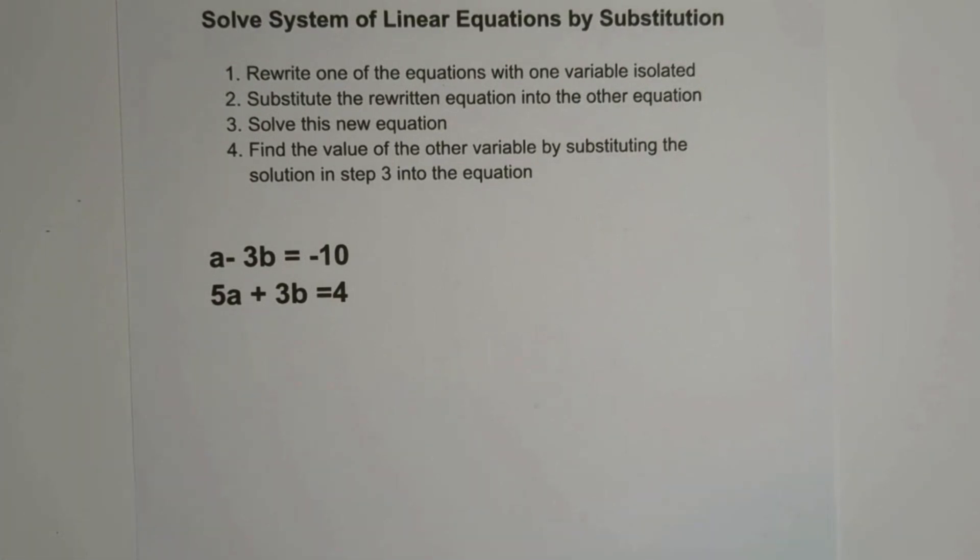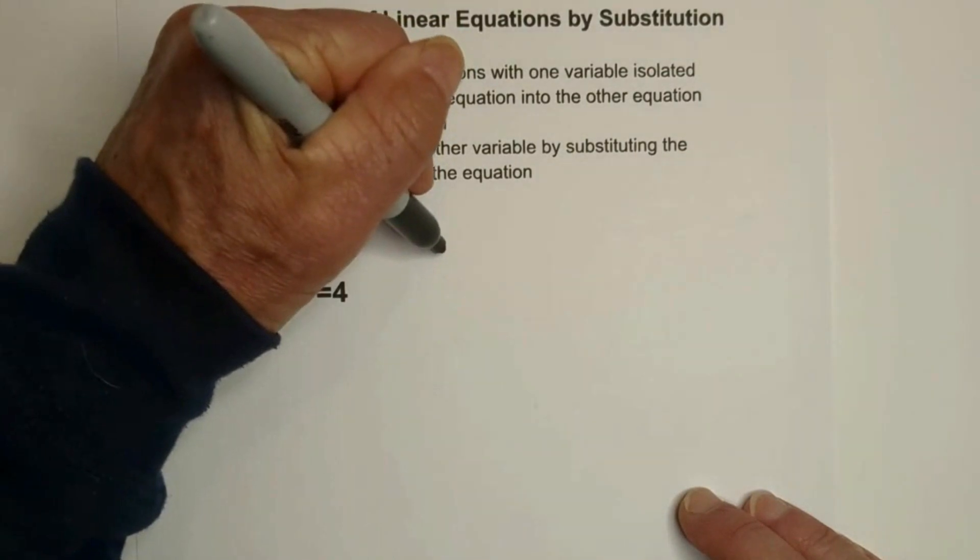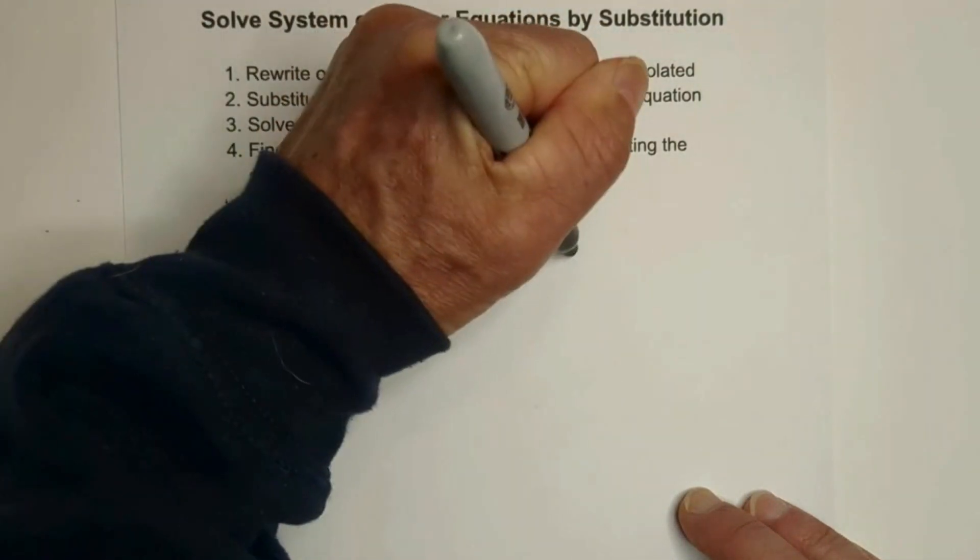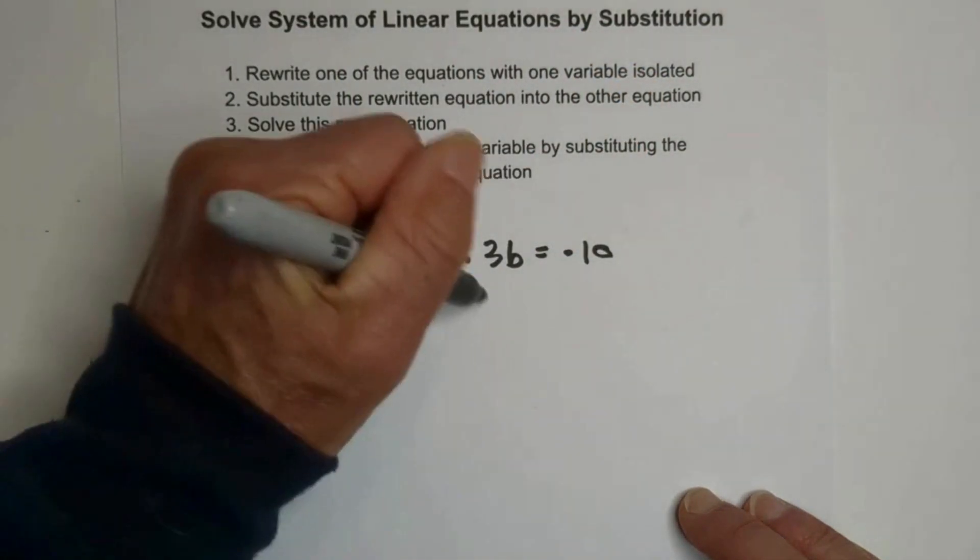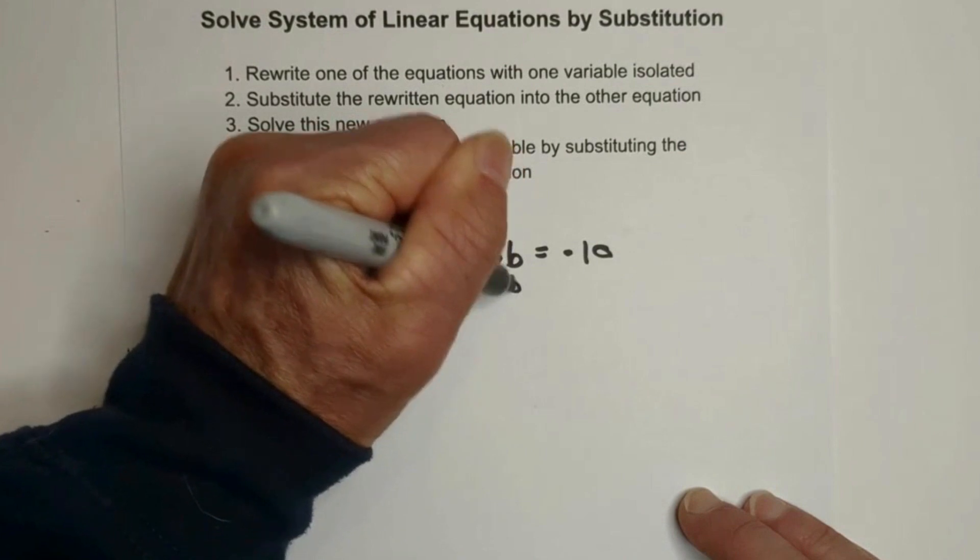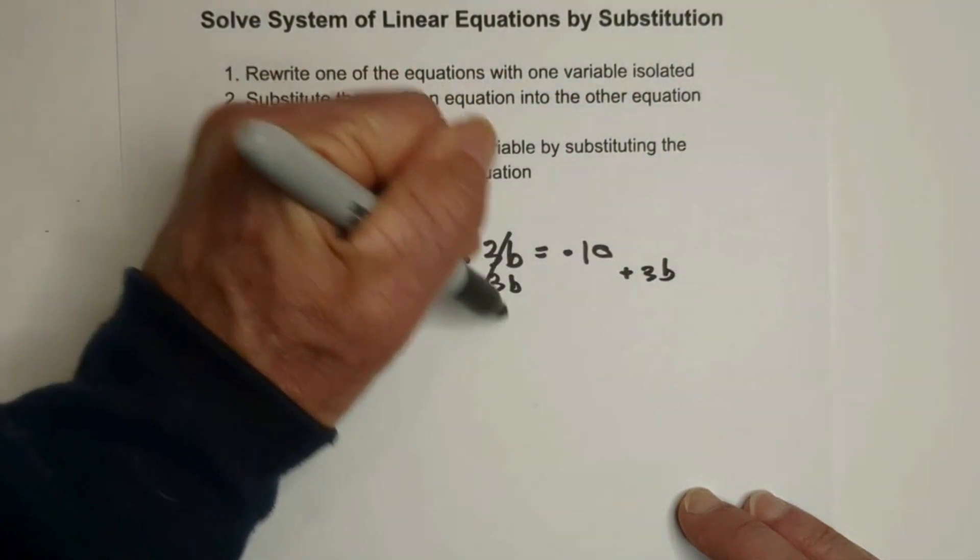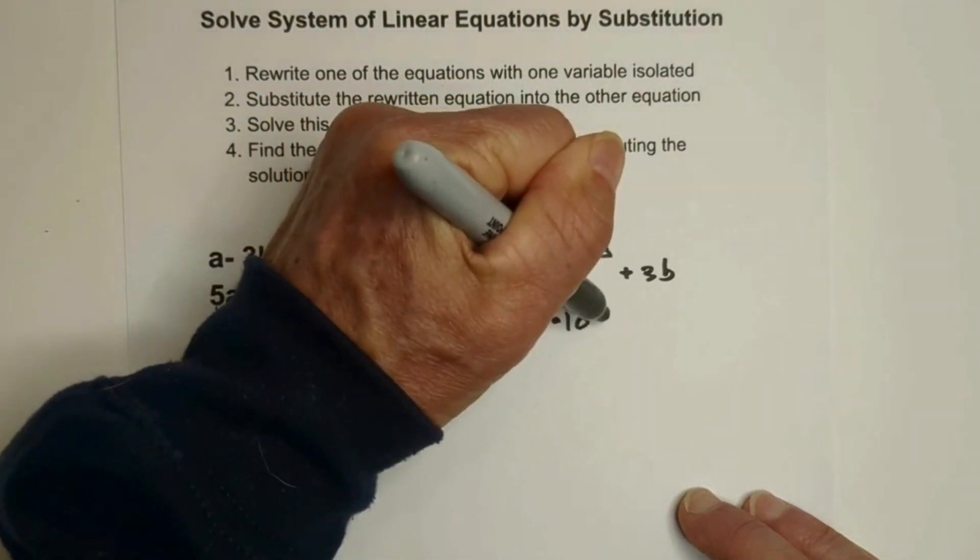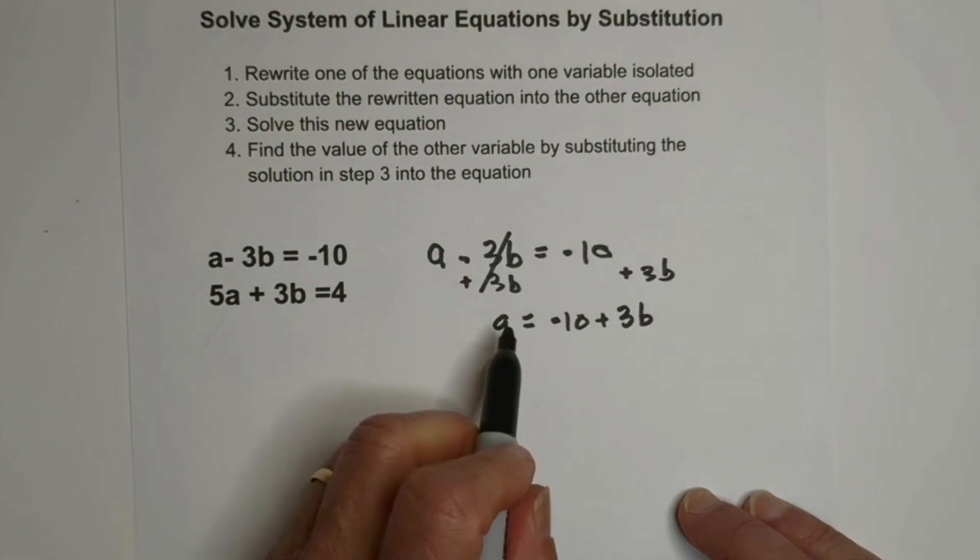Let's start with step one. I'm going to go ahead and solve for this one. So I have A minus 3B equals negative 10. I need to get the A isolated. So I'm going to add 3B to both sides. And I'm left with these cancel. A equals negative 10 plus 3B. So now I have completed step one.